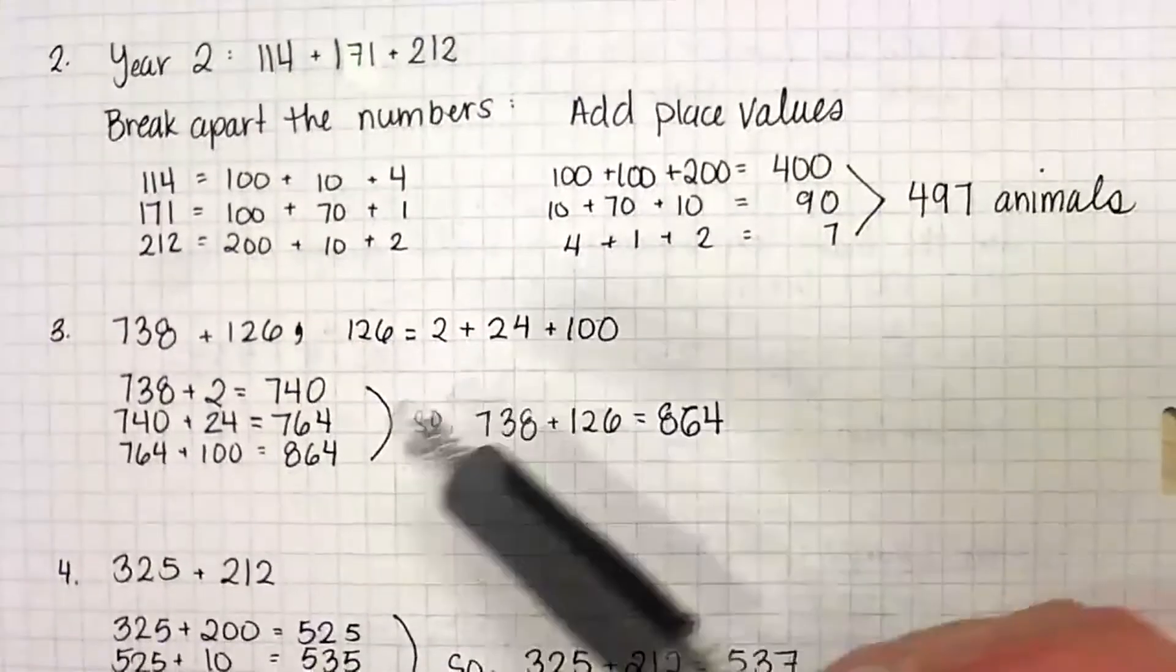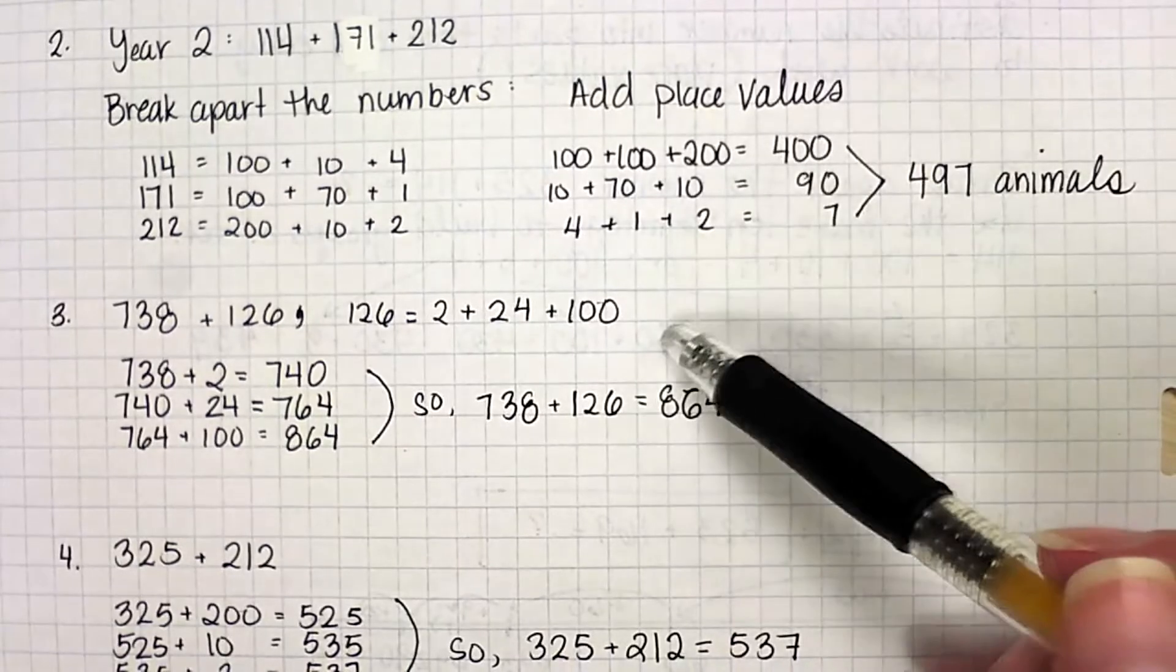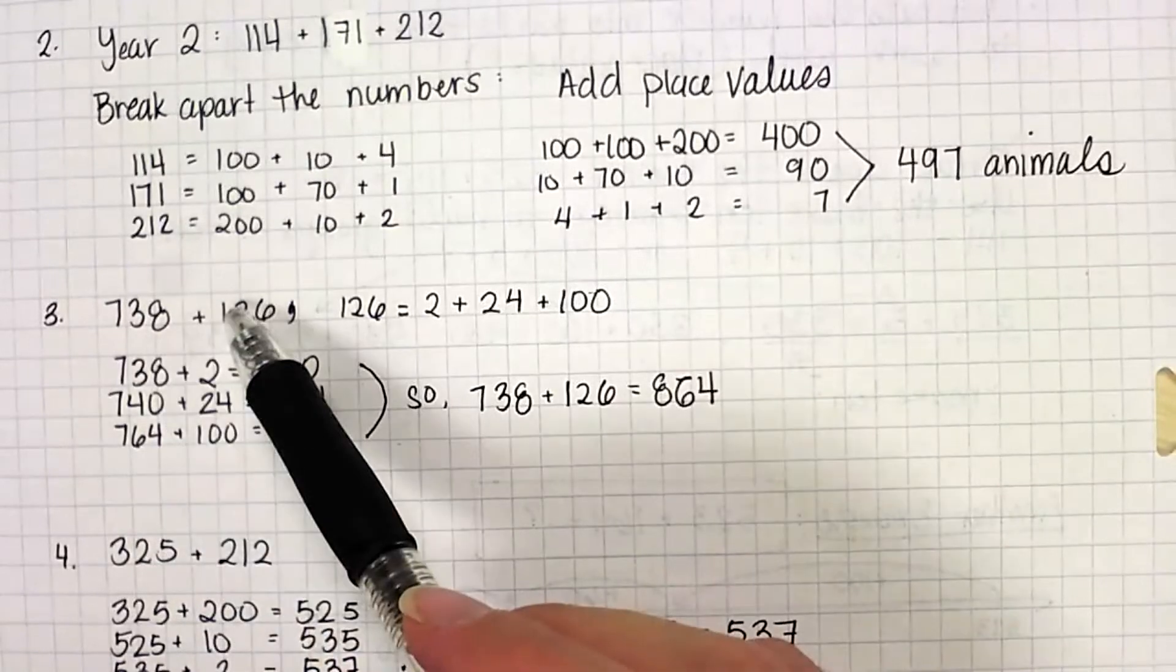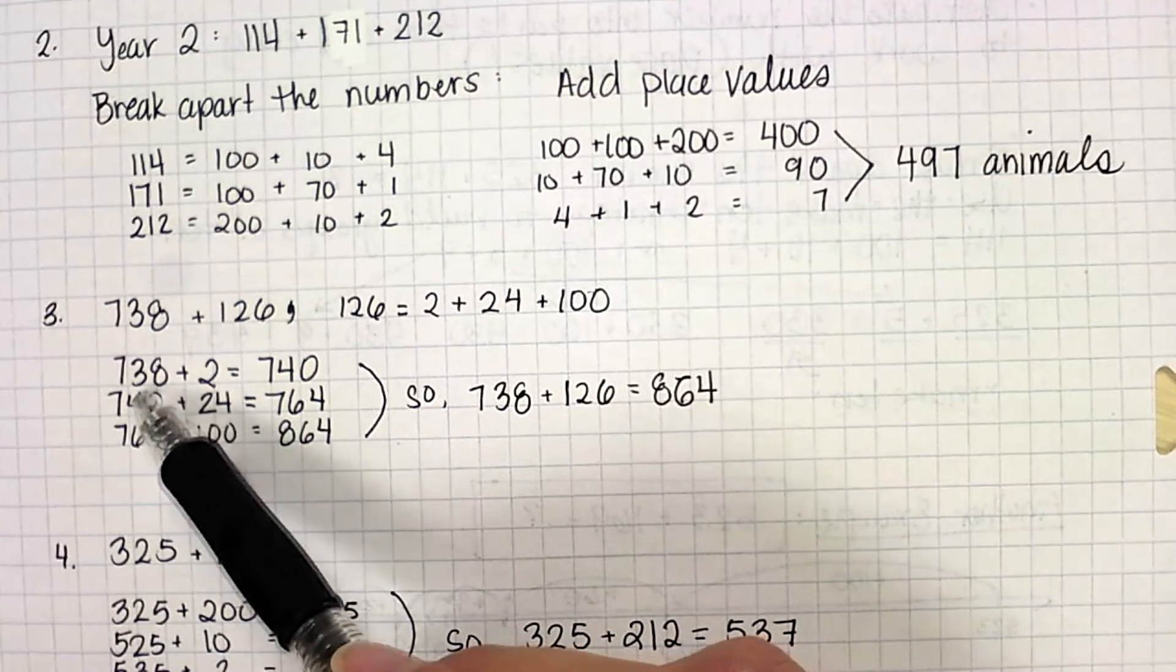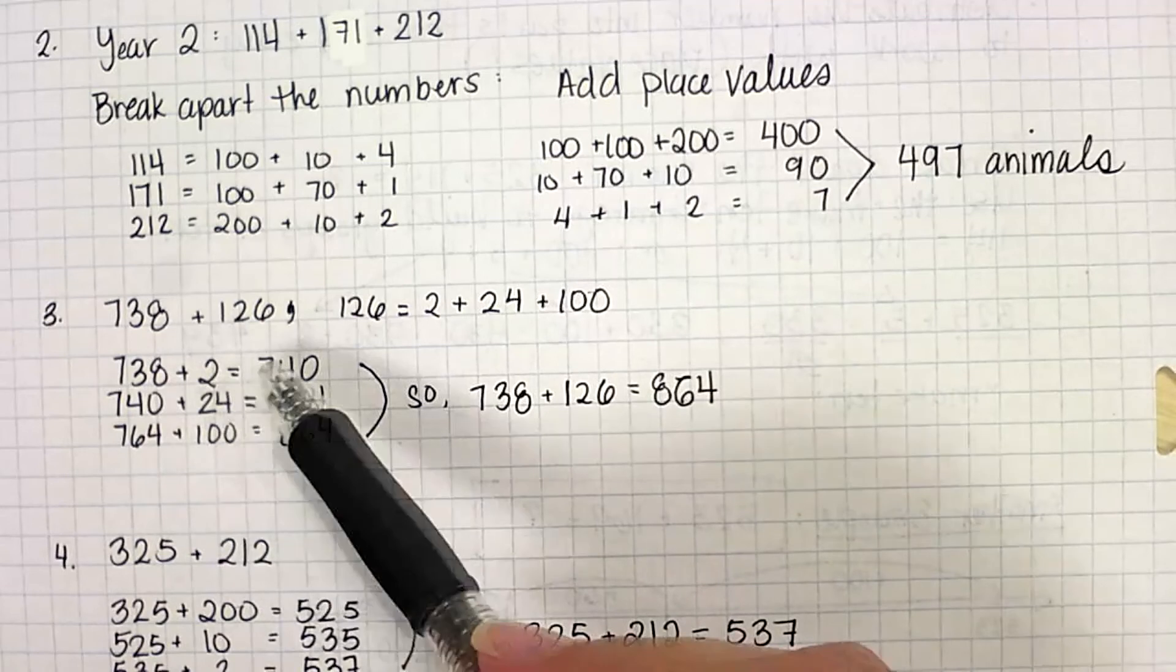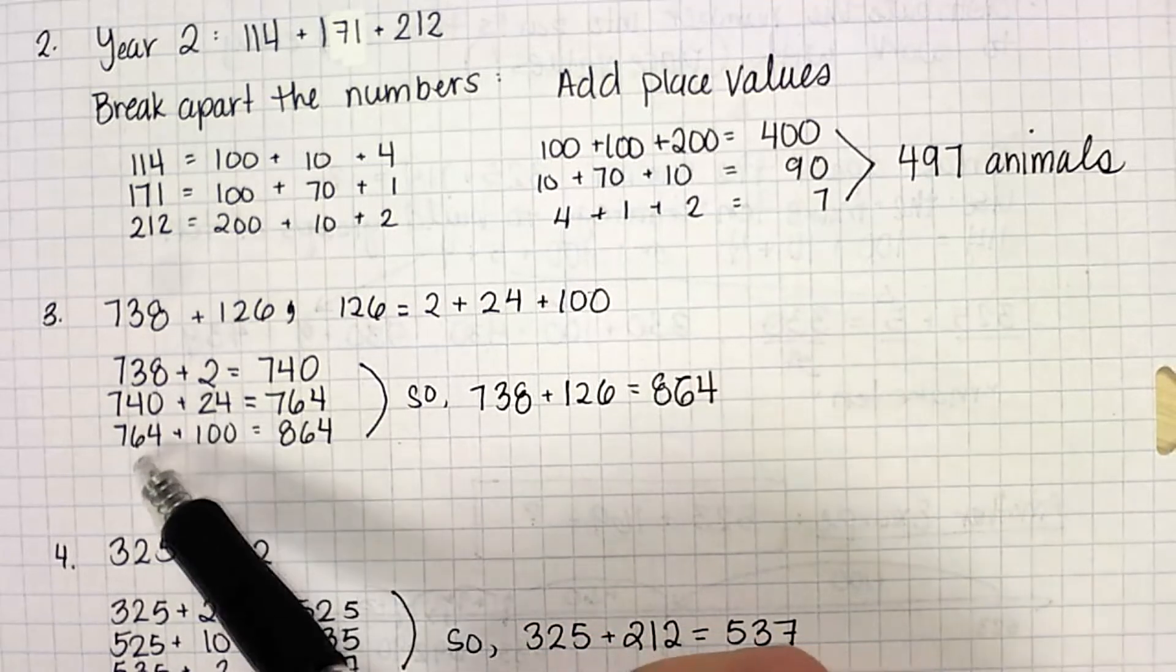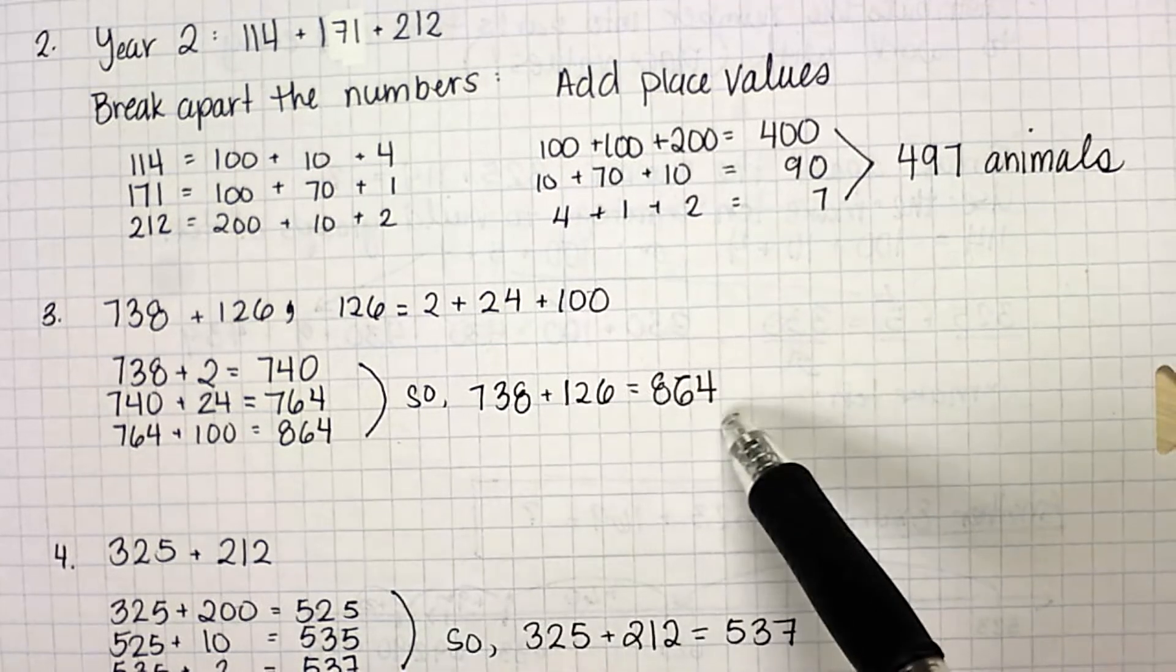Now for the next one, they gave us this addition sentence and we had to break it apart to figure out using making groups of 10 to figure out the answer. So 738 plus 126, I can see since I have 38 to get it up to the next group of 10, which is 40, I need to add two more. So I broke it up into 2 and then 24 and 100. So 738 plus 2 is 740. 740 plus 24 is 764. 764 plus 100 is 864. Or you could have done these two in a different order if you like. Either way, you're going to get to the same answer.